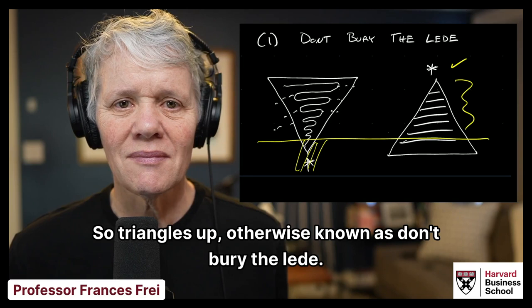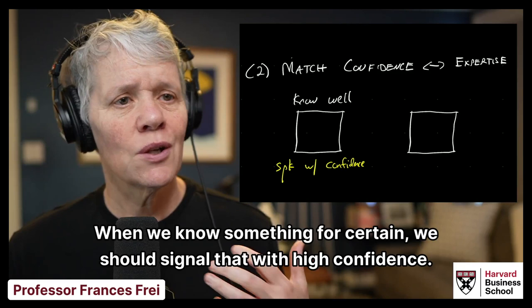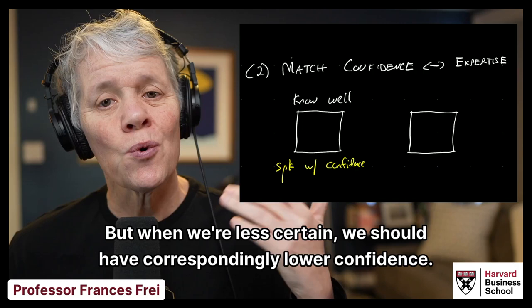The second bit of advice I have found myself giving is to match our confidence with our expertise. When we know something for certain, we should signal that with high confidence. But when we're less certain, we should have correspondingly lower confidence.